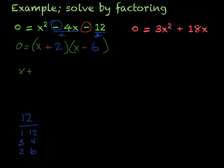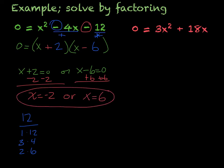Now I just set each one equal to 0. So that's going to be x + 2 = 0, or x - 6 = 0. And then I just solve each one. Subtract the 2, x = -2, or I add the 6, x = positive 6. So those would be my two possible answers.